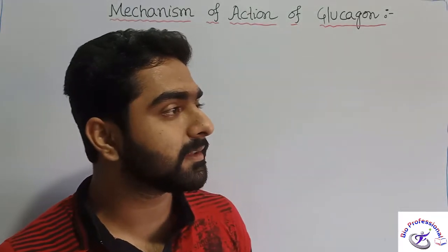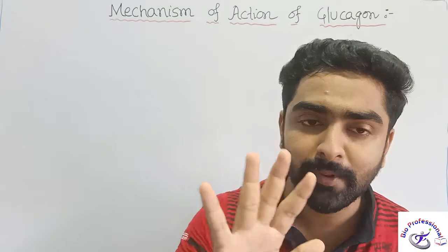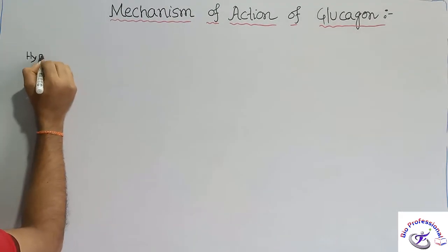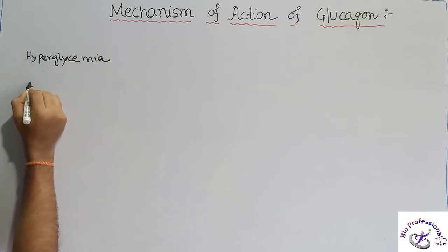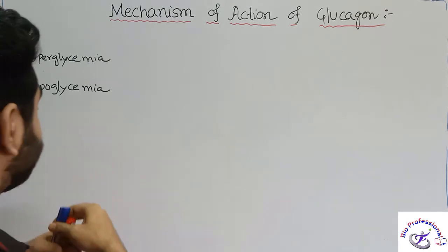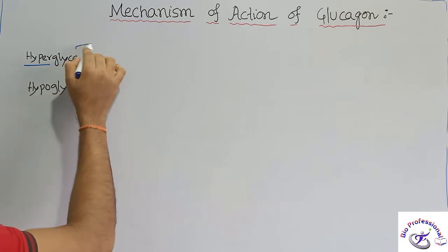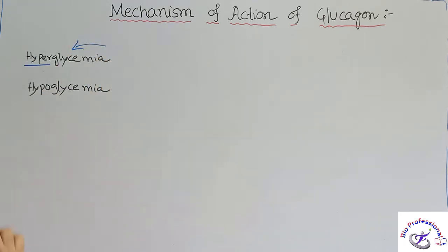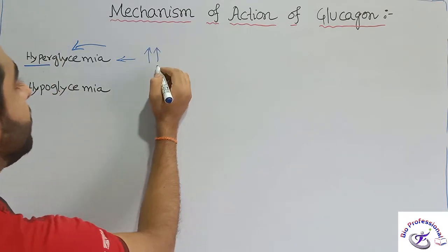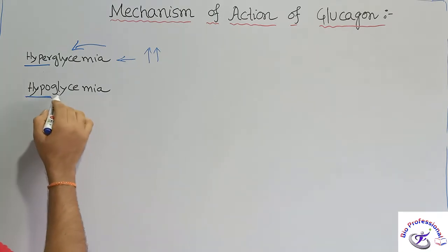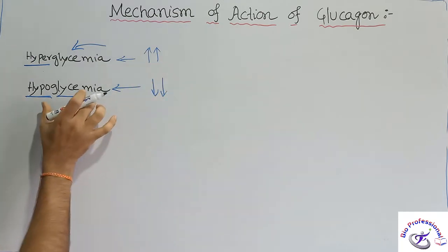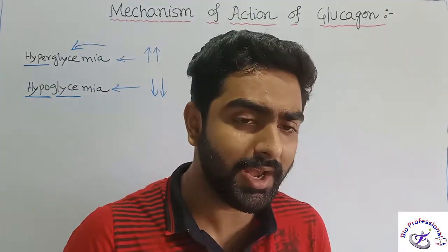Before understanding how glucagon takes action, you need to understand two important terms: hyperglycemia and hypoglycemia. Hyperglycemia — 'hyper' means more, and 'glycemia' means concentration of glucose in blood — so hyperglycemia is a condition when the level of sugar in your blood is increased. Hypoglycemia means 'hypo' means less, so if the blood glucose level is low, we call it hypoglycemia.